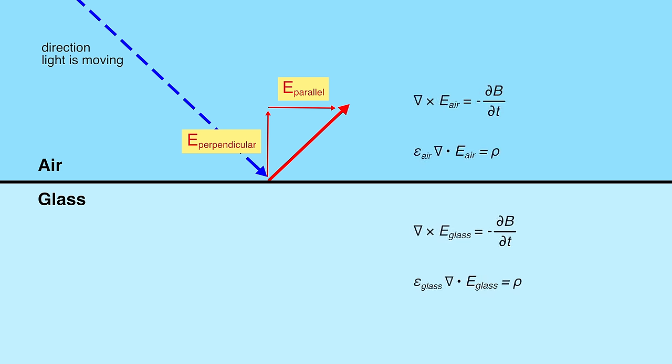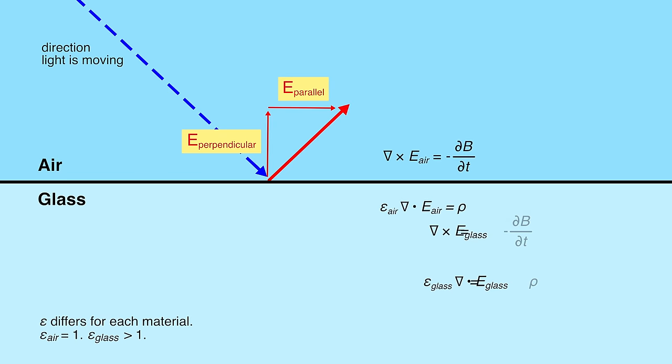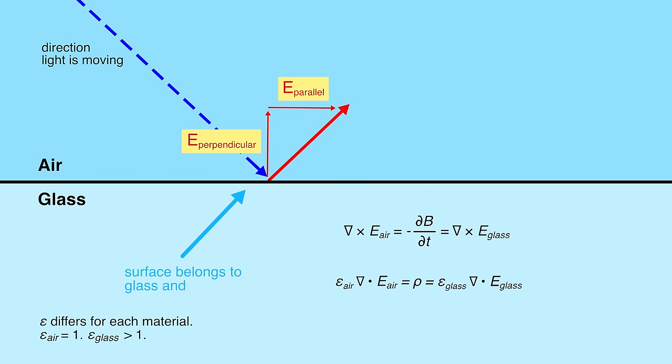And here is where Maxwell's equations come into play. Two copies of the equations are written here. One that covers when light is traveling in air, and one where it is traveling in glass. So here's the key point. The surface belongs to both the air region and the glass region. This means that at the surface, the equations on the top and the equations on the bottom have to apply.